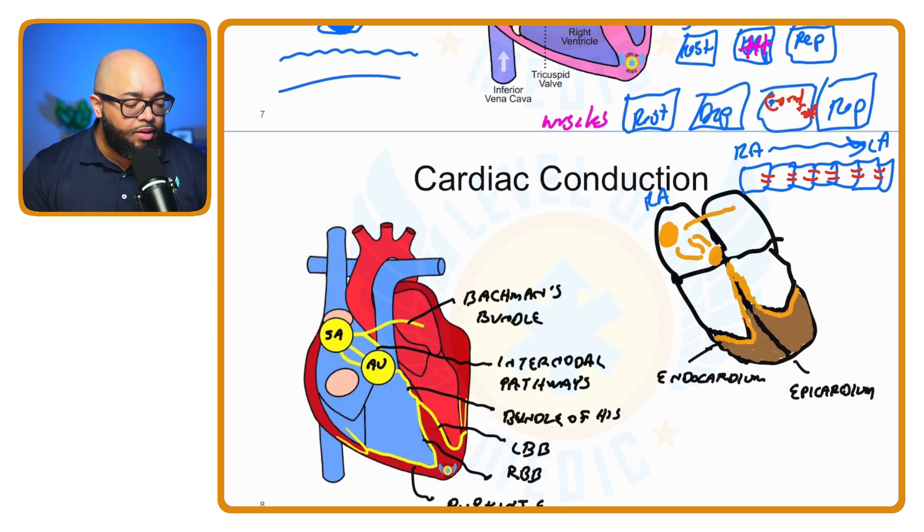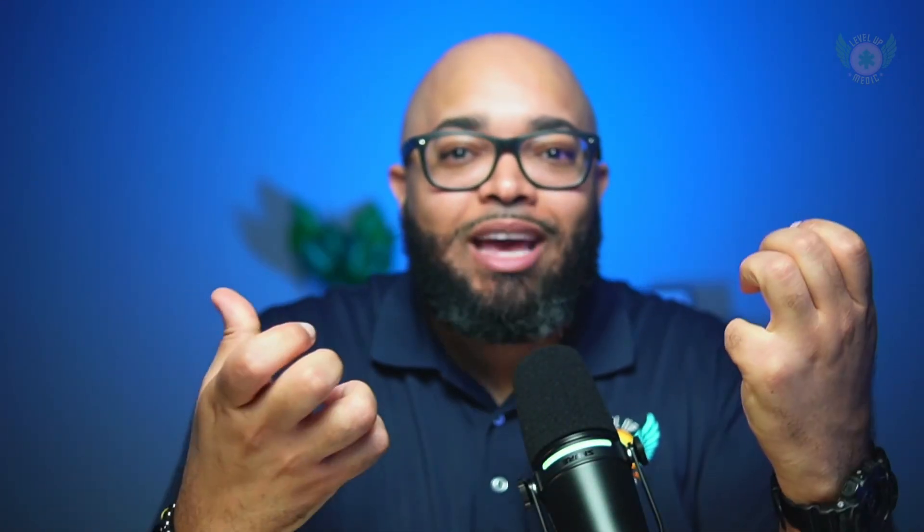Once the atria contract, we don't want the ventricles to get excited too fast and start contracting at the same time. We can't have the atria and ventricles contract simultaneously because now blood is not moving — valves have to close when they contract. There's actually a term for that: isovolumetric contraction, where there's a pressure buildup but no blood flow because all valves are closed.